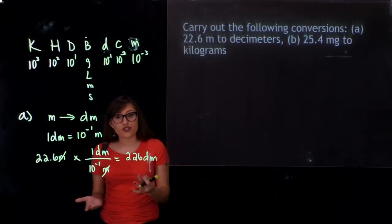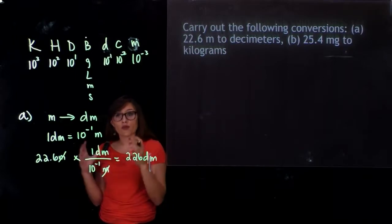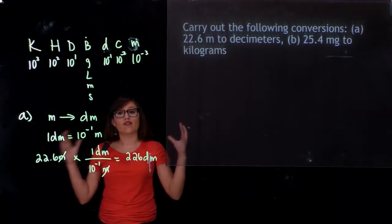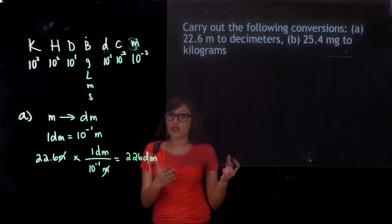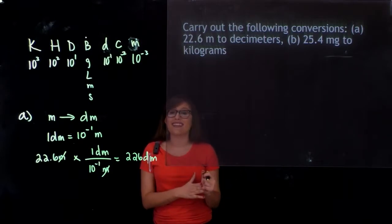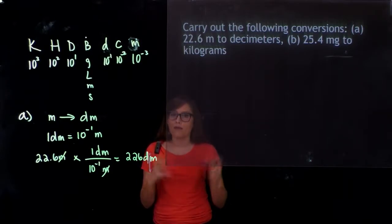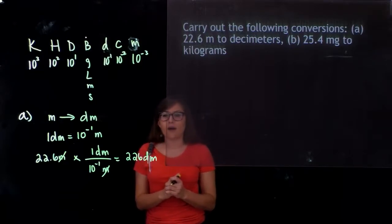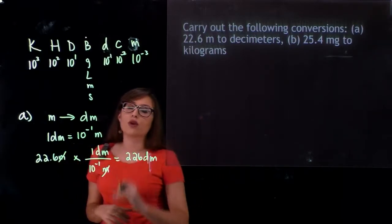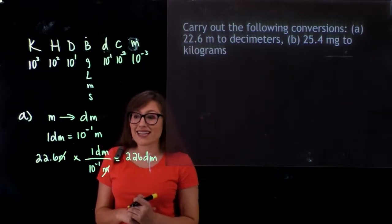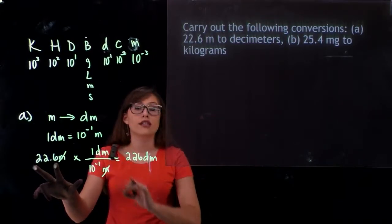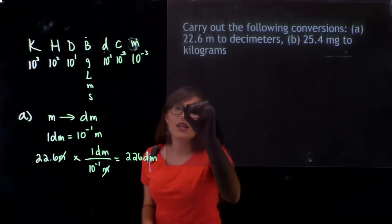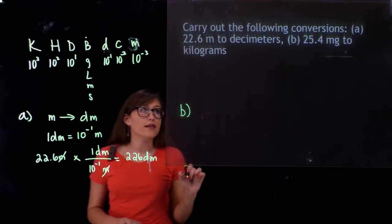We can do a little check for this: if we're starting off with meters, which is something very large, and we're moving to a smaller unit such as decimeters, we know we're going to have a lot more of that object. So we'll have 226 decimeters, which is a larger numerical value than 22.6. Let's go ahead and start on Part B.